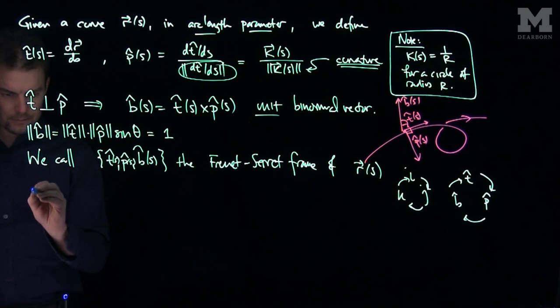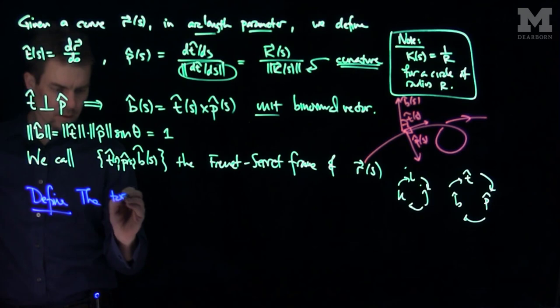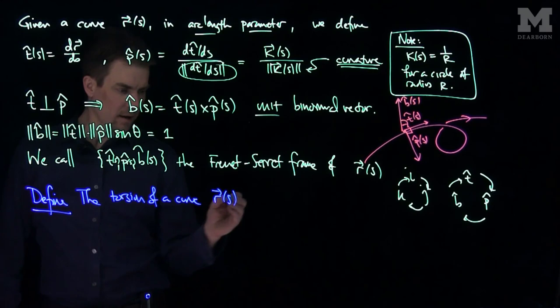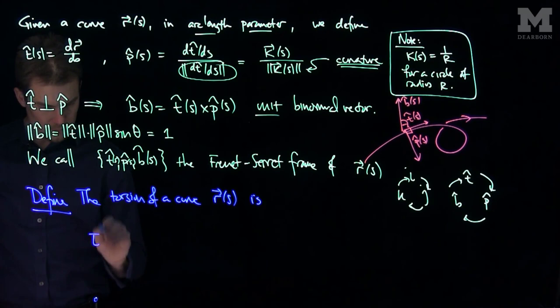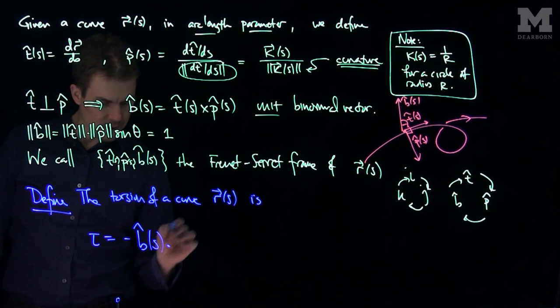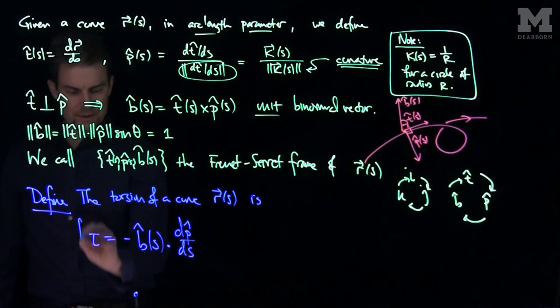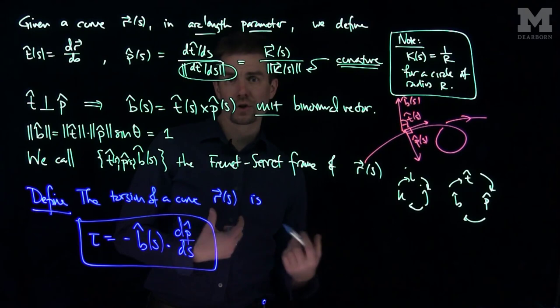Now we can define one other quantity associated with this curve. We'll define the torsion of a curve r of s as tau, and what tau is, it's negative b-hat of s, the unit binormal vector, dot the derivative of p-hat of s.